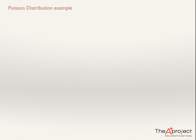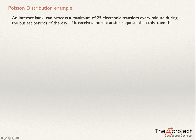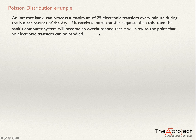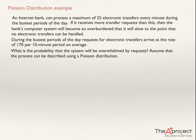I would like to show you a problem that is an application of the Poisson distribution. An internet bank can process a maximum of 25 electronic transfers every minute during the busy period of the day. If it receives more transfer requests than this, the bank's computer system will become so overburdened that it will slow to the point that no electronic transfer can be handled. During the busiest period of the day, requests for electronic transfers arrive at the rate of 170 per 10 minute period on average. What is the probability that the system will be overwhelmed by requests? Assume that the process can be described using a Poisson distribution.